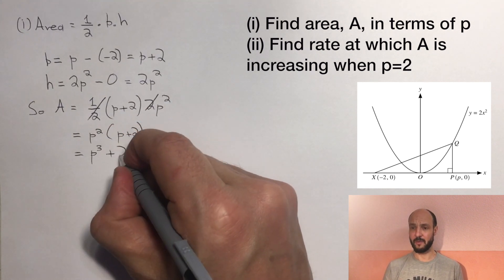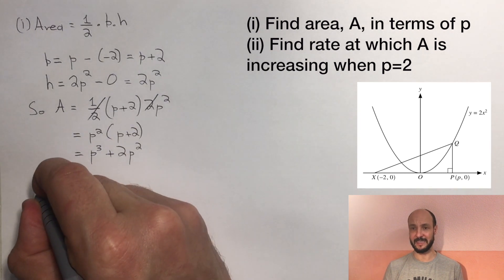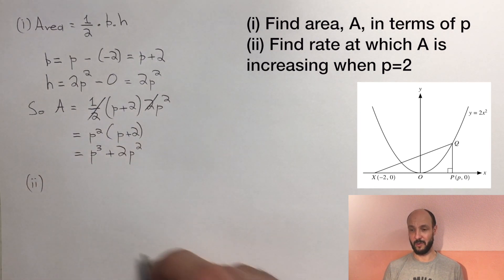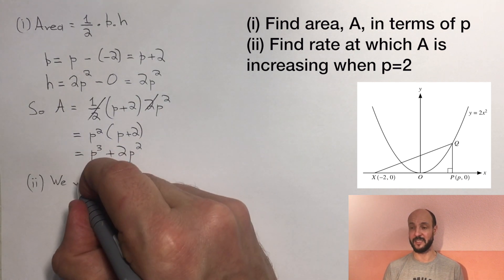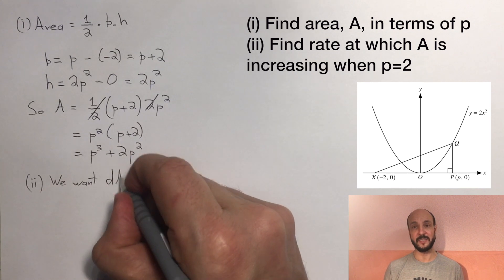Okay, for the second one, we want to find the rate at which A is increasing. So we want to know the rate at which A is increasing over time, so the change in A over time. And we do this in two steps.